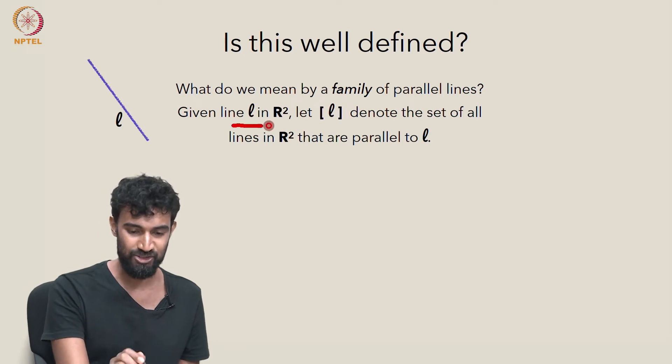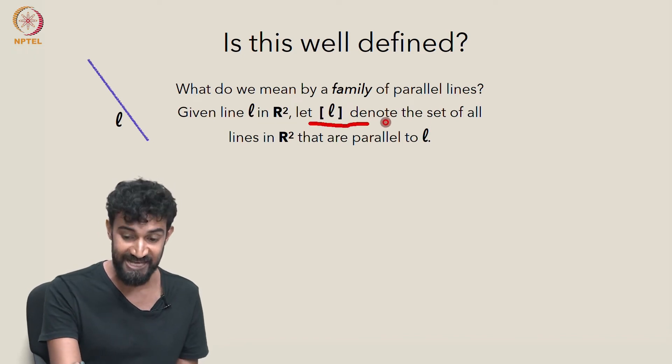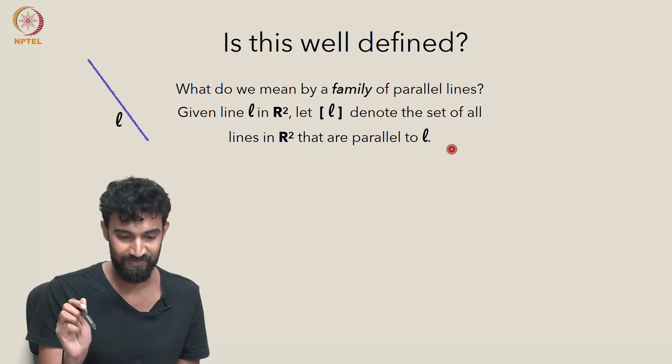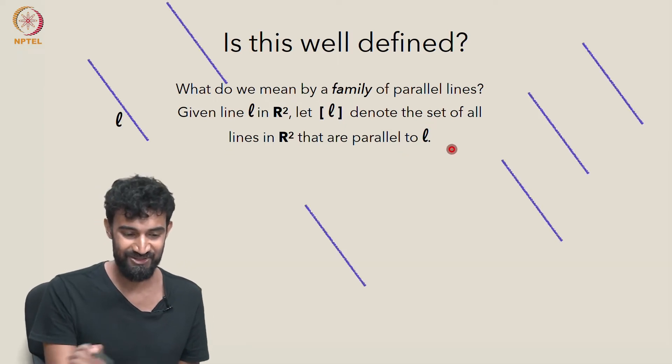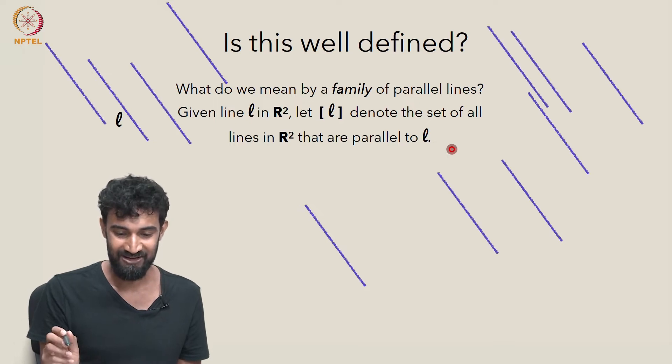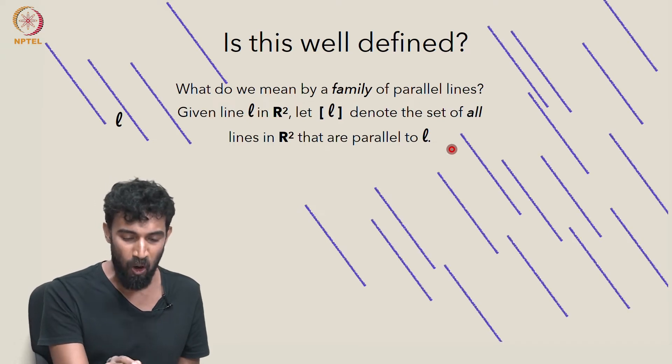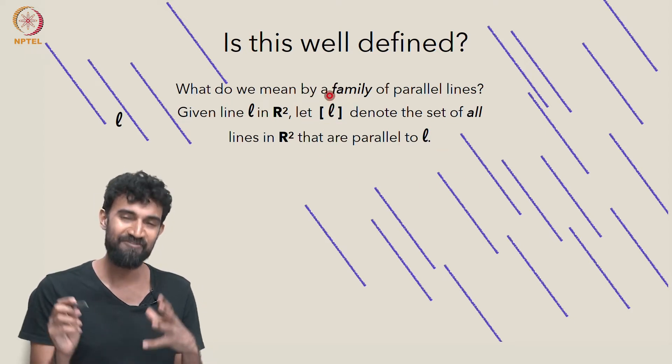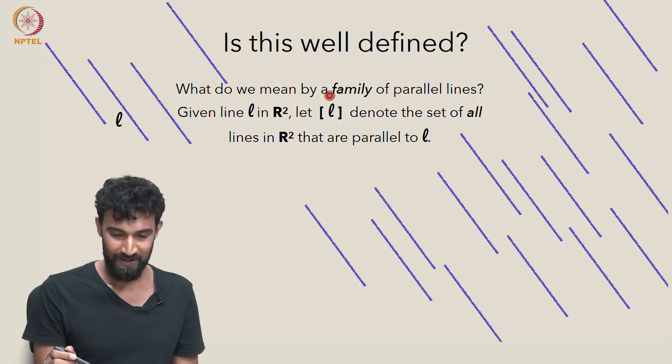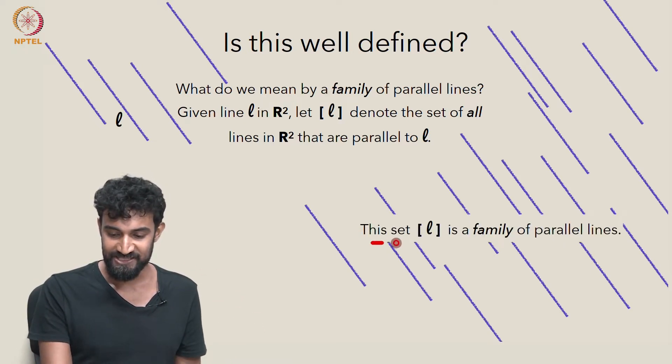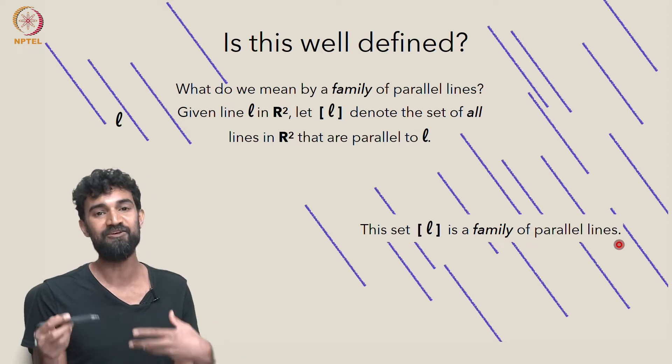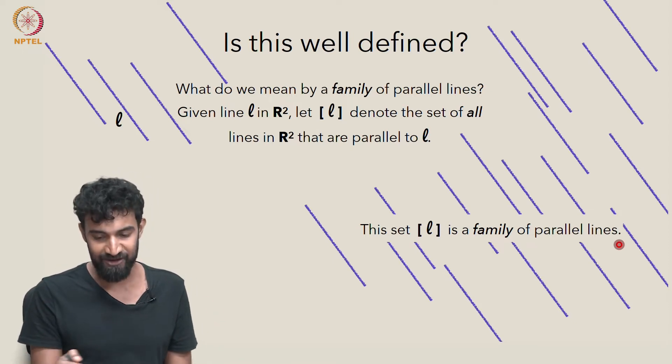Well, given a line L in R², let's let bracket L denote the set of all lines in R² that are parallel to L. All of these guys are parallel to L. So all of the lines in R² that are parallel to L, all together, let's denote the set of all of them by bracket L. It's a very big set, infinitely large. This set is a family of parallel lines. That's what we mean when we talk about a family of parallel lines, the entire family.